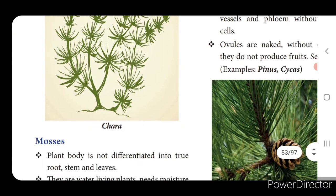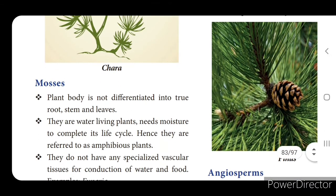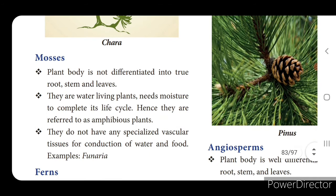Next is mosses. The plant body is not differentiated into true root, stem and leaves. They are water-loving plants that need moisture to complete their life cycle. Moisture means irapadam. Hence they are referred to as amphibious plants - just like amphibians which can live both on land and in water, mosses also need moisture to complete their life cycle.